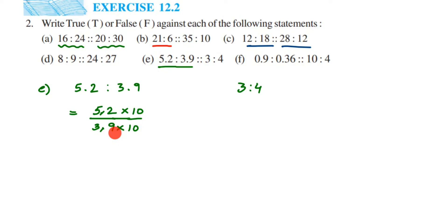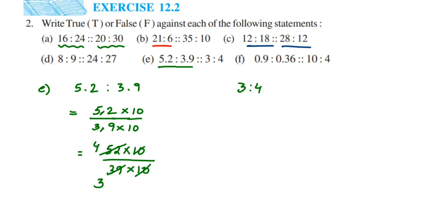Rewriting, we get 52 multiplied by 10 over 39 multiplied by 10. The two 10s cancel. Now cancel 52 and 39 in the 13 table: 13 fours are 52, 13 threes are 39 — giving us 4 by 3. The second ratio 3 by 4 converts directly to the fraction 3 by 4. Since 4 by 3 is not equal to 3 by 4, they are not equal. The answer is FALSE — they are not in proportion.